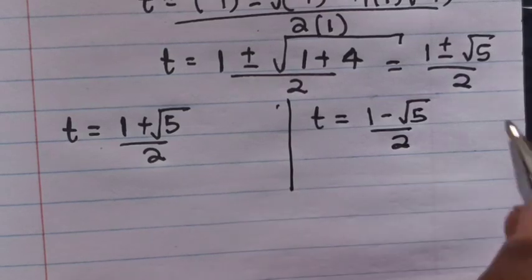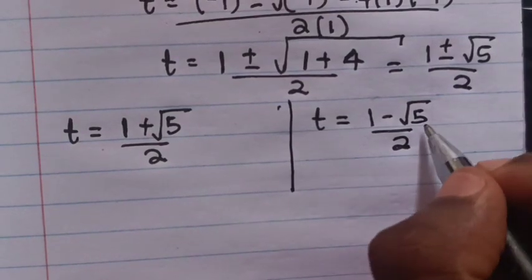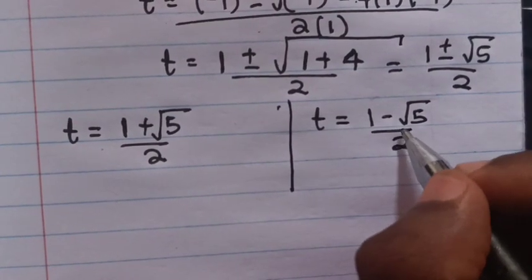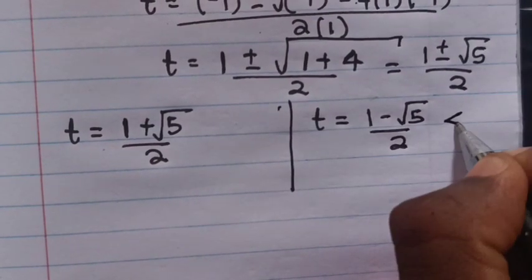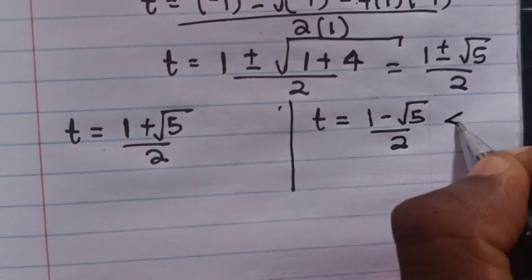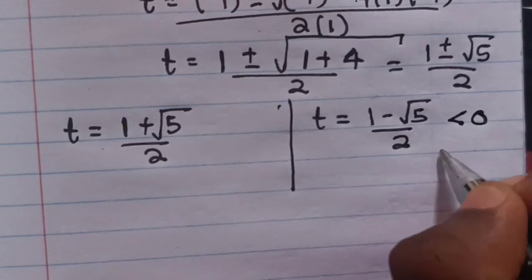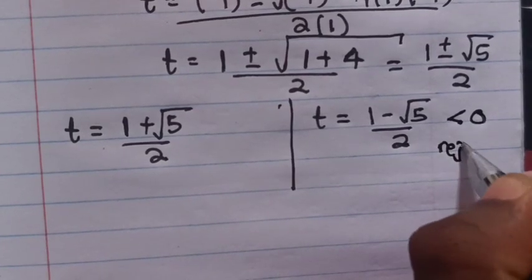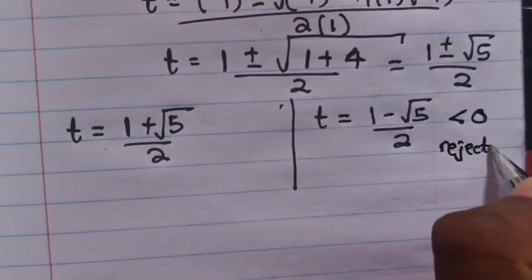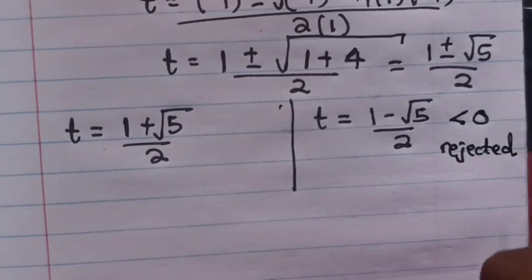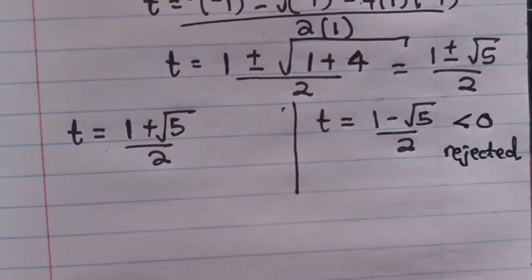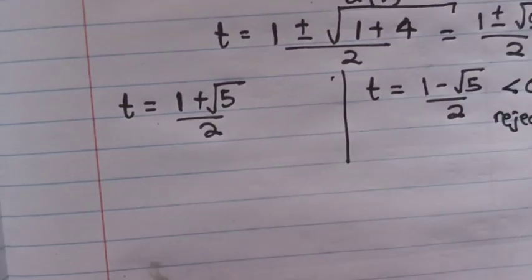Here, t equals (1 minus square root of 5) divided by 2, which is less than 0. When it is less than 0, this value of t is rejected.